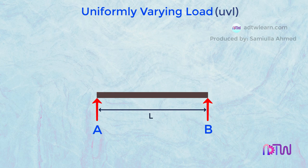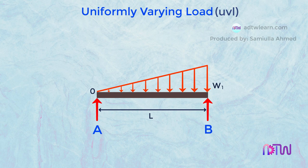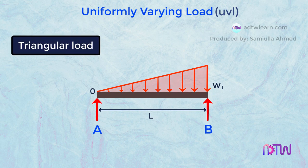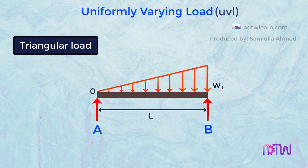First, the load can vary from 0 from one end, that is at point A, to W1 on the other end, that is at point B. This kind of load is called a Triangular Load. Here the load acts at a distance equal to L by 3.